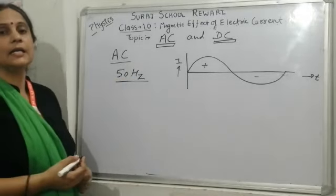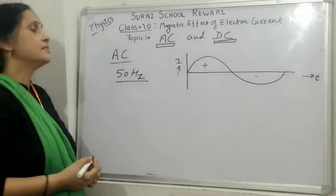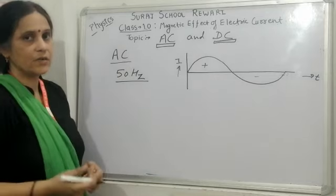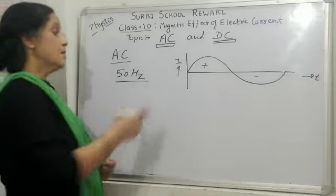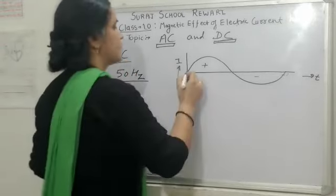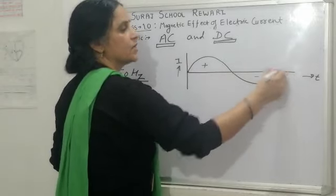In our country, in India, the frequency of AC current is 50 Hertz. Frequency is the number of rotations in one second. That means 50 rounds, 50 rotations in one second. And it is the one rotation.